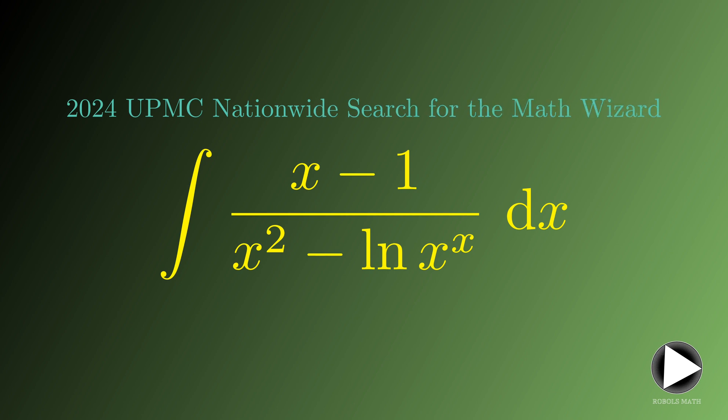Find the integral of x minus 1 all over x squared minus ln x raised to x with respect to x. This question is from the final round of the 2024 UP Math Club nationwide search for the math wizard, which is one of the most prestigious collegiate math contests in the Philippines.